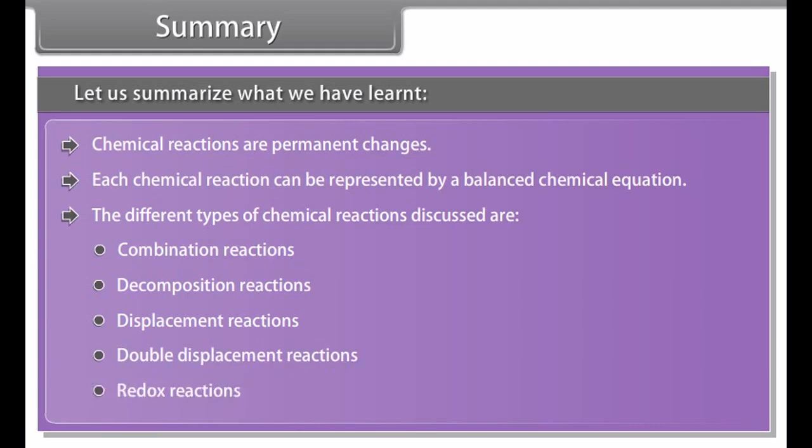Summary: Chemical reactions are permanent changes. Each chemical reaction can be represented by a balanced chemical equation. The different types of chemical reactions discussed are combination reactions, decomposition reactions, displacement reactions, double displacement reactions, and redox reactions.